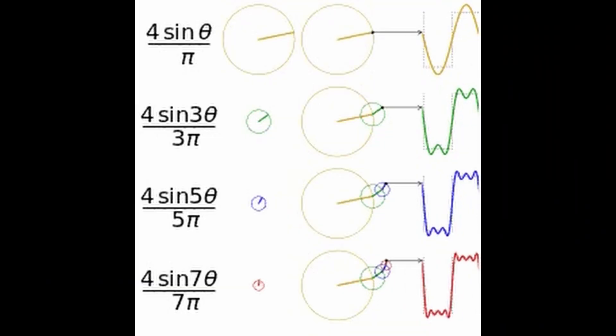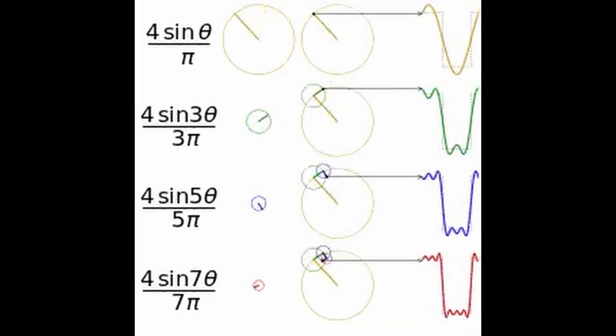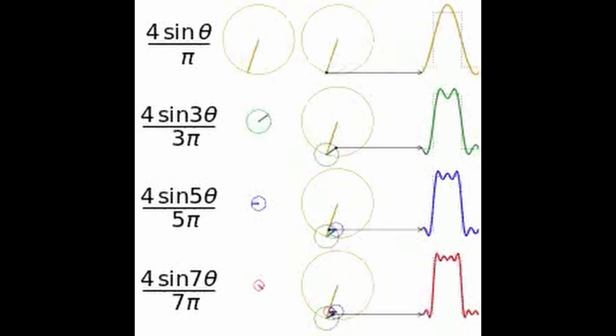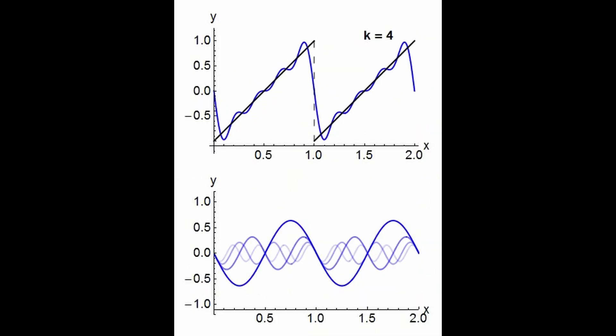The Fourier transform is a mathematical operation that converts a function of time or space into a function of frequency. It allows us to analyze the frequency components of a signal, such as the pitches of a musical sound or the wavelengths of light.